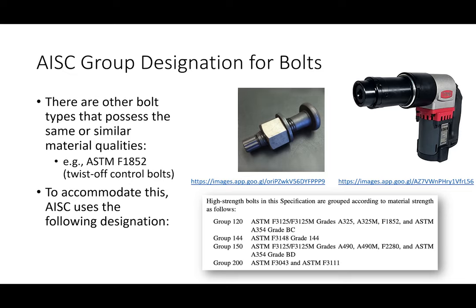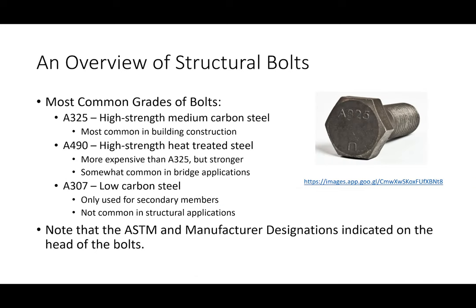This slide encapsulates one of the biggest changes from the last manual to this one. It's going to take me a little time to get used to this designation because just last year we were using different groups. About two specifications ago, AISC started to change the way that they delineated bolts in the specification. Let me explain why. This right here — going back a slide — is a standard ASTM A325 bolt, meaning it is to be installed using a standard method: bolt, nut, wrench, et cetera.